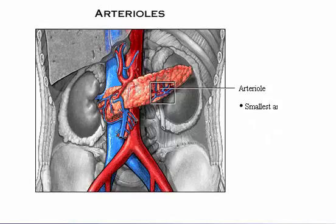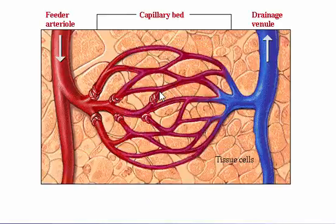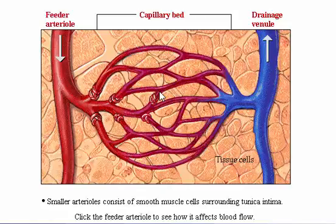Arterioles are the smallest arteries. The larger arterioles have all three layers, but their tunica media is mainly smooth muscle. Feeder arterioles bring blood directly to capillary beds. These smallest arterioles consist of only smooth muscle cells surrounding the tunica intima. Click on the feeder arterioles to see how it affects blood flow through the capillary bed.